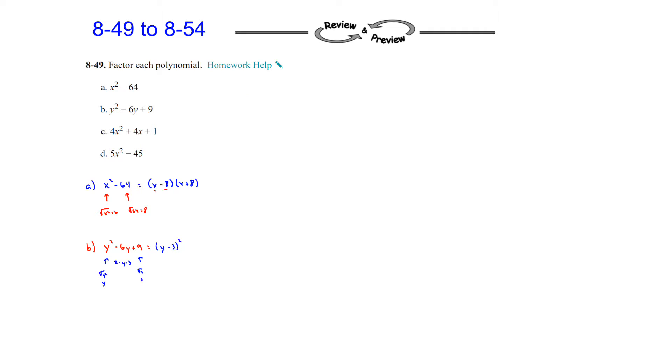Part C, we have 4x squared plus 4x plus 1. Let's take a look at this and see if this is also a perfect square trinomial. So 4x squared would be 2x, the square root of it. Square root of 1 is 1. So the first and last terms are perfect squares. Is our middle term 2 times 2x times 1? And it is, it's 4x. That means once again, we can factor this into 2x plus 1 quantity squared.